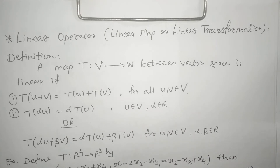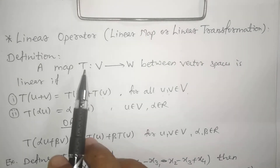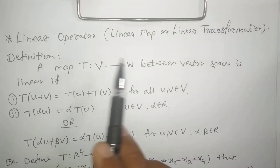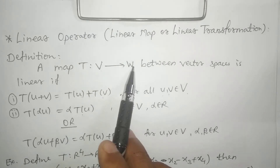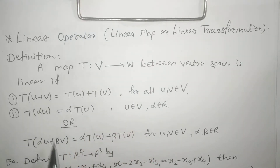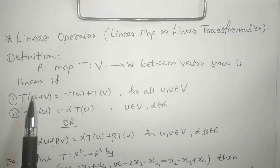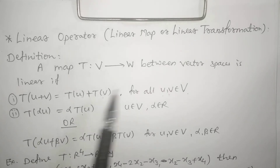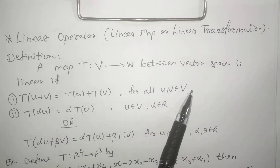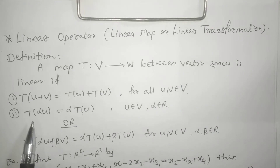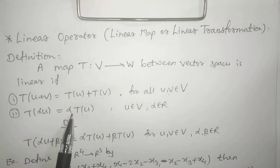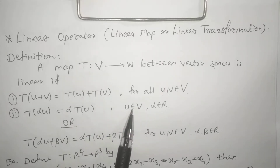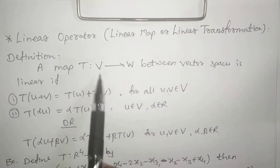So what is the definition? A map T from vector space V to vector space W is linear if it satisfies these two conditions. First condition: T of U plus V is equal to T of U plus T of V, for all vectors U and V from vector space V. Second condition: T of alpha U is equal to alpha into T of U, for vector U from vector space V, and alpha is a real number.